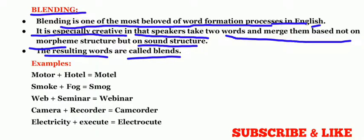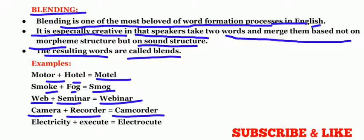The resulting words are called blends. Now, the examples like motor plus hotel known as motel. The next one is smoke plus fog known as smog. The next one is web plus seminar known as webinar. The next one is camera plus recorder known as camcorder. The next one is electricity plus execute known as electrocute. And the most recent we can say that Virat and Anushka, that is Virushka.